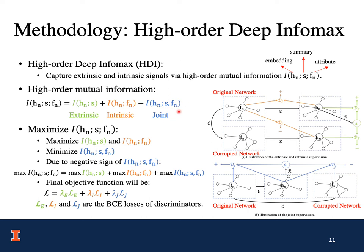Given this equation, if we want to maximize the high-order mutual information, we are actually maximizing the extrinsic and intrinsic signals and minimizing the joint signal. However, due to the negative sign of the joint signal, we are actually maximizing the joint signal. The final objective function shows that maximizing the high-order mutual information is actually maximizing the extrinsic, the intrinsic, and the joint mutual information.